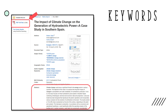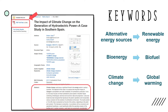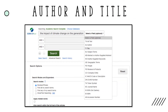Keep in mind that similar keywords can be used if you don't find good results in your first search. For example, instead of 'alternative energy sources,' you could try 'renewable energy.' Instead of 'bioenergy,' you could try 'biofuel.' And instead of 'climate change,' you could try 'global warming.' Finally, you can also search for specific sources by author or title by using the drop-down menu next to the search bar when doing an advanced search.